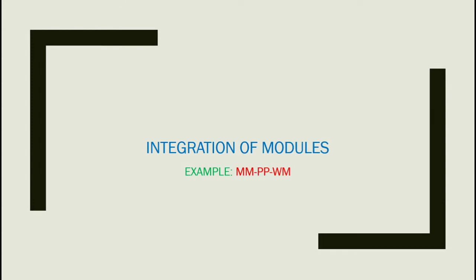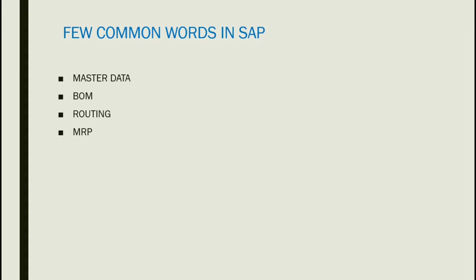Integration of modules is the most important thing in SAP. For example, MM, PP, and WM — Materials, Production, and Warehouse — are integrated with each other. We take materials for production, and after production, the finished goods move to the warehouse management area.